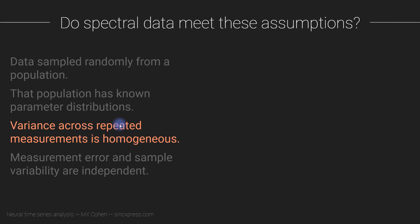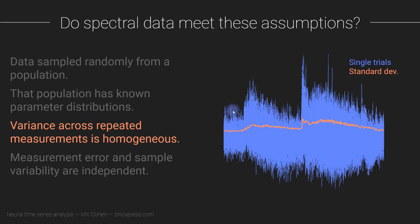Now let's discuss the assumption that variance across repeated measurements is homogeneous. That means if you take repeated measurements of the brain, the variance across different measurements should be the same — homogeneous. Unfortunately, that's also not the case in electrophysiology data. You can see the single trial traces and the standard deviation over all trials — the assumption is that this standard deviation should be constant over time, but it's not.